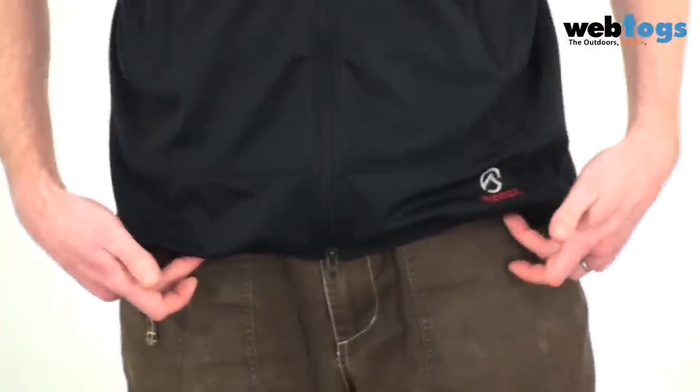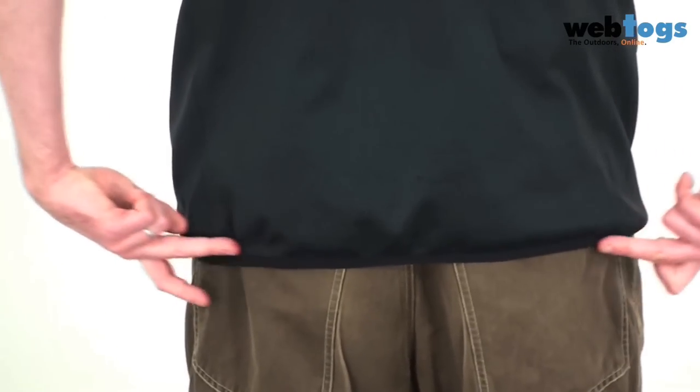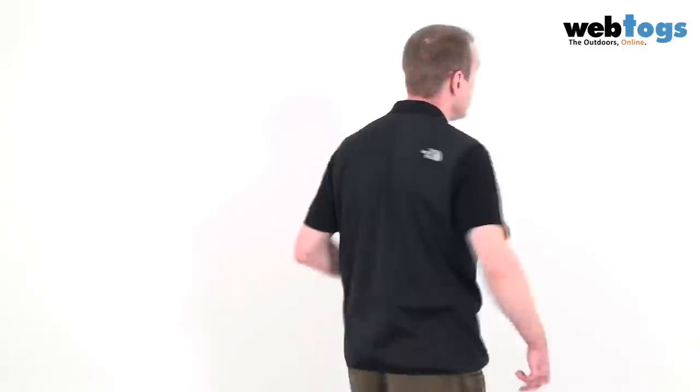Usually as a size 38 inch chest I can go for a small but I've had to size up to a medium here for this particular vest and if we look at the cut you'll see it's quite short just below the waist at the front and as we go around to the back you'll see it drops just down below the waist at the back as well so it's what they call an alpine cut or a climbing cut.